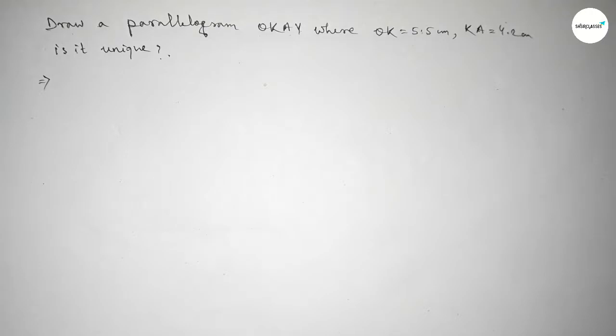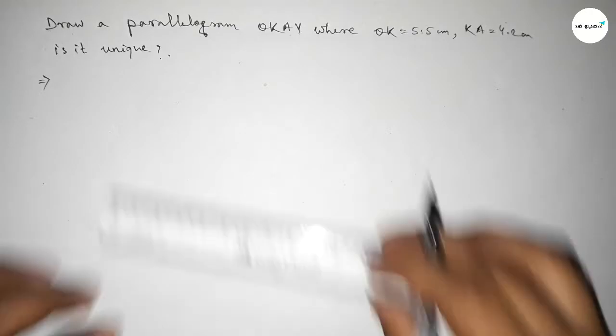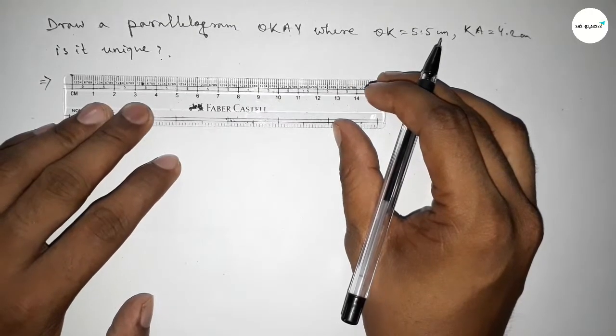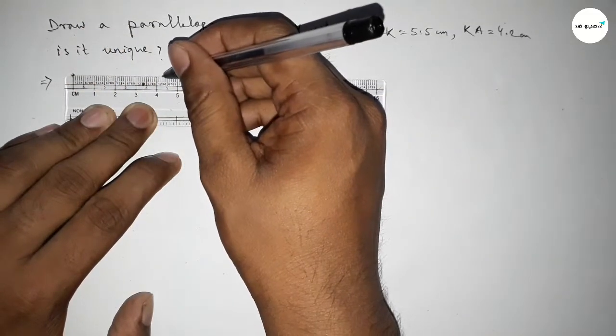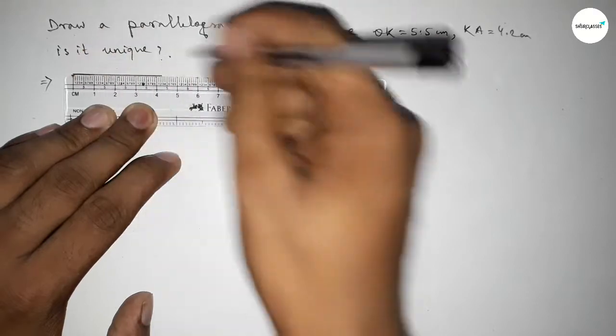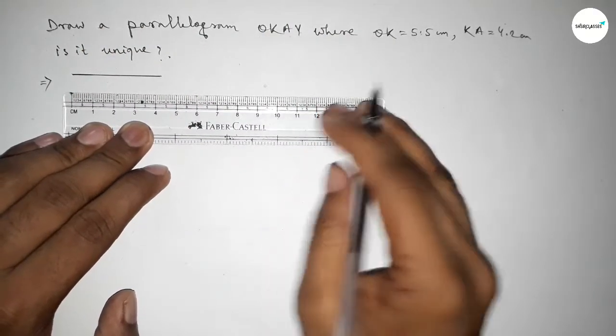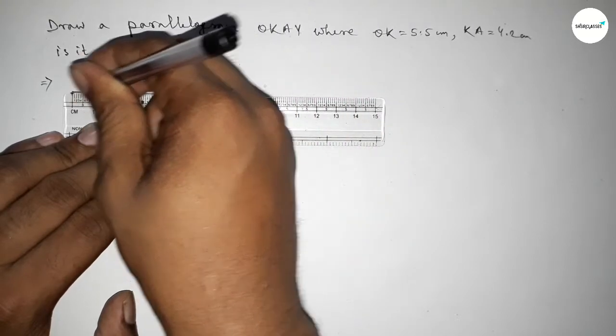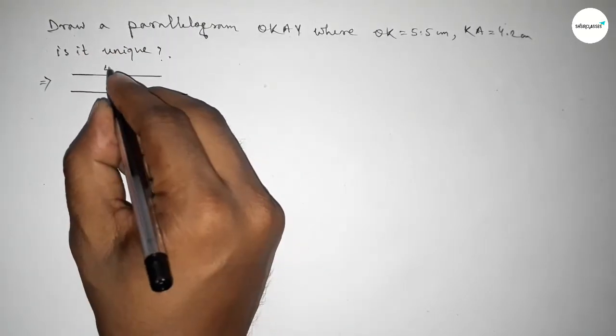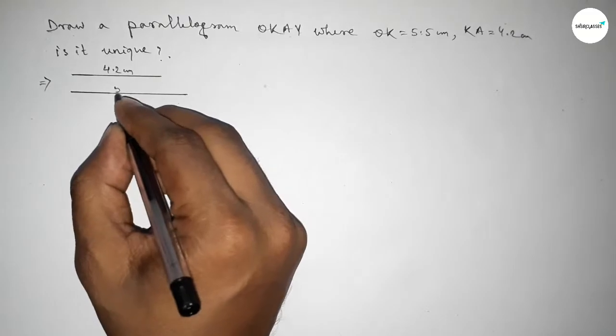First of all, we have to draw the parallelogram. First, drawing here the two sides: 4.2 centimeters and another line 5.5 centimeters. Then we'll discuss if it's unique or not. So this side is 4.2 centimeters and this side is 5.5 centimeters.